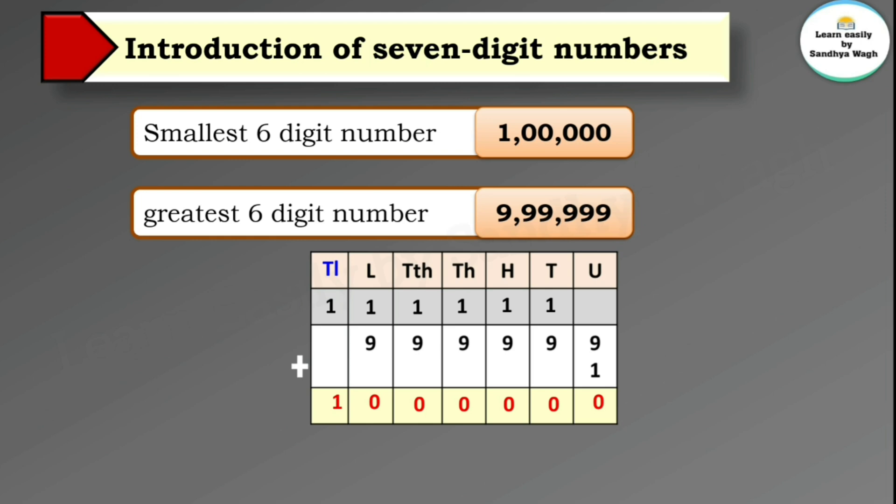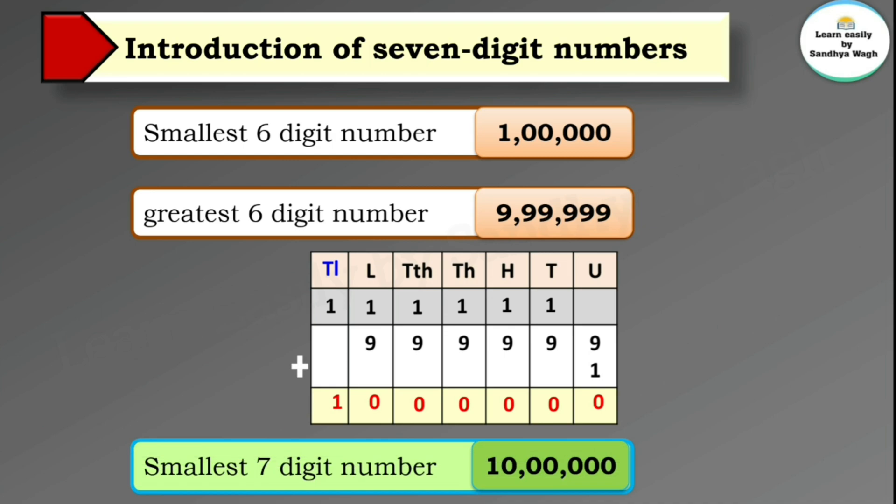So the number we get is 10 lakh. This is the smallest seven-digit number — the smallest seven-digit number is 10 lakh.